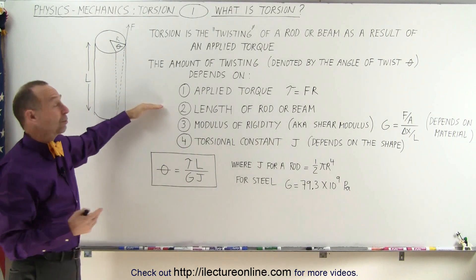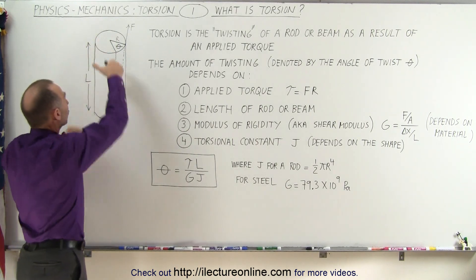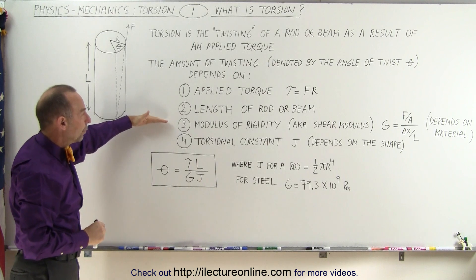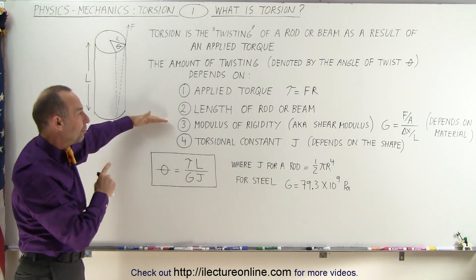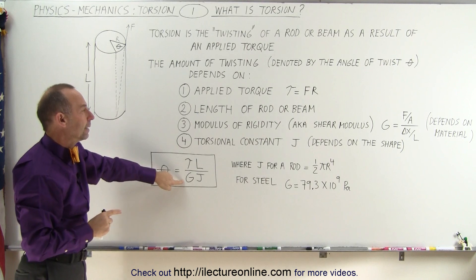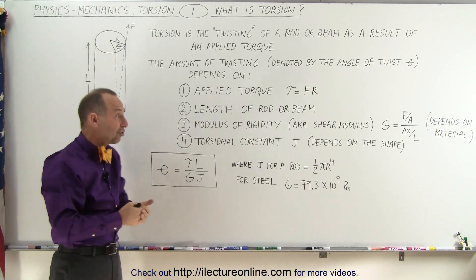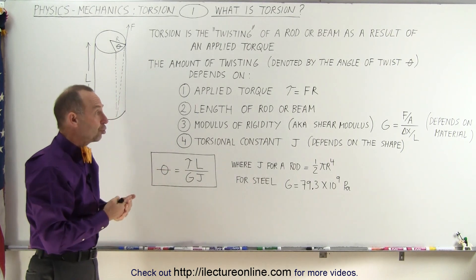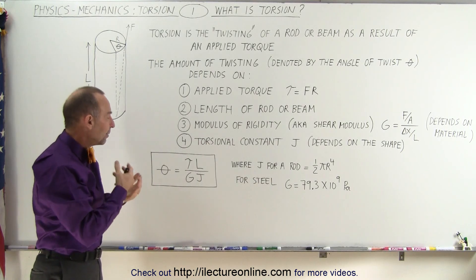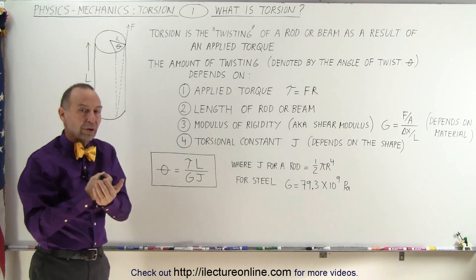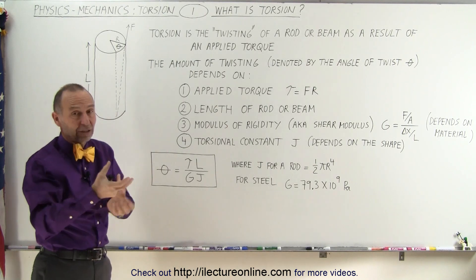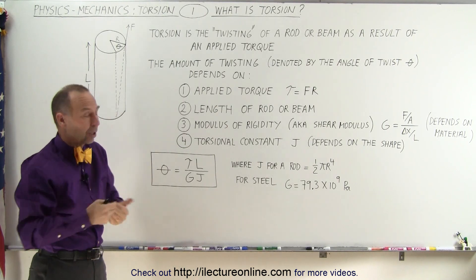We have the length of the rod or beam — the longer the beam, the greater the twist angle. Third, we have the modulus of rigidity, called G. We also know that constant as the shear modulus — it's exactly the same thing. It really depends upon the strength of the material. For something really strong, the number is very high; for something that's not as strong, the number is lower.